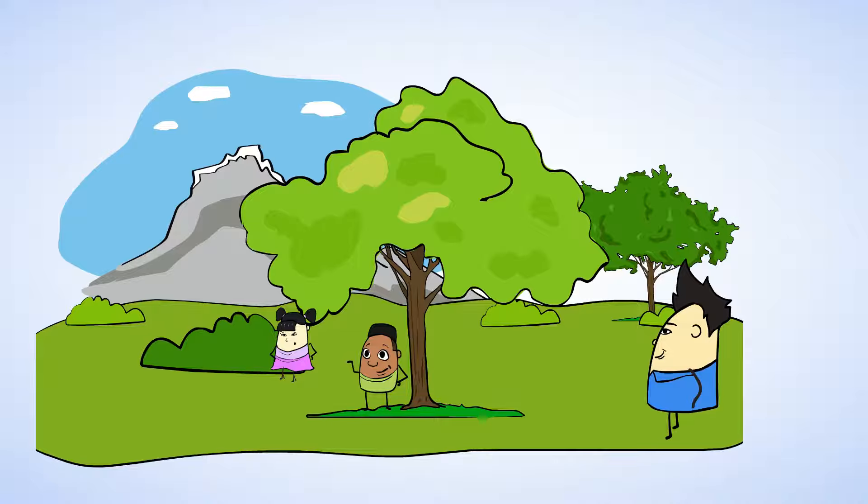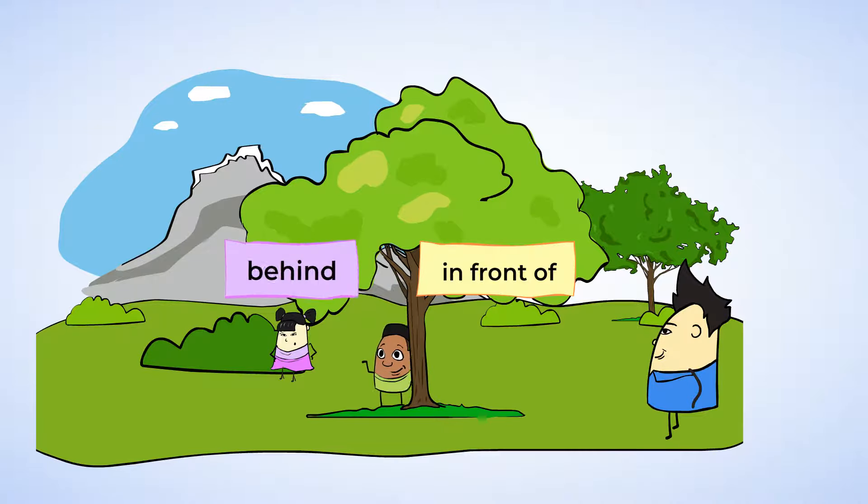Hmm. Should Will hide in front of or behind this tree? Well, this is Will in front of the tree. That's not a good hiding place. It's pretty easy to find him. So what about if Will goes behind the tree? Oh, now it's much harder to see Will. Great hiding place, Will.